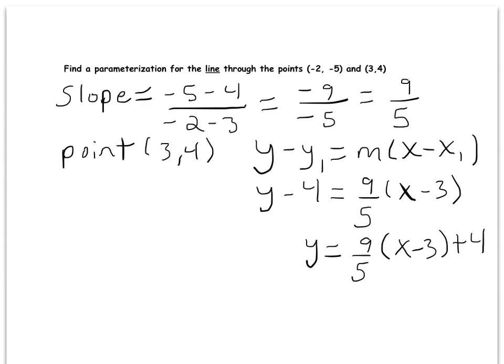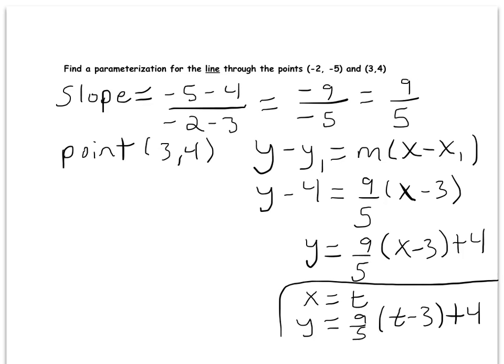Cartesian means in terms of x and y — it means we can graph this on the Cartesian plane. You've always been writing Cartesian functions; you just maybe haven't used that word. Now I could turn this into a parametrization really easily by just letting x equal t and letting y equal nine-fifths(t minus 3) plus 4. That's the trivial parametrization where I'm just letting x equal my parameter t, and everywhere I see an x I substitute in t. It's valid but not very interesting.